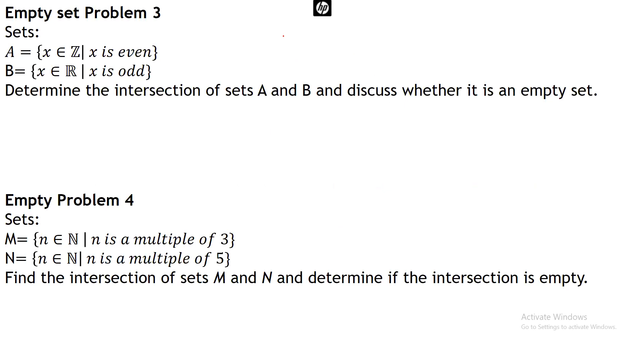Now if you look at this, A intersection B consists of elements that are common to both A and B. Since no integer can be both even and odd simultaneously, the intersection is an empty set.